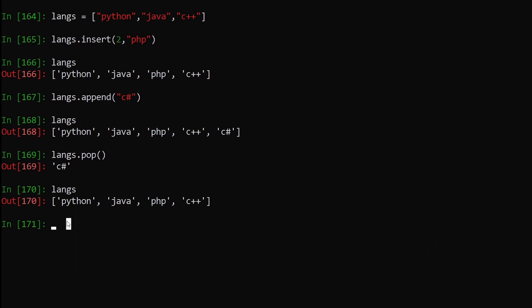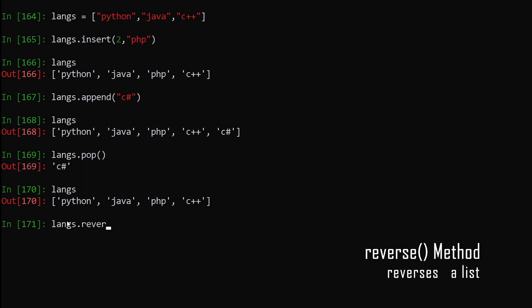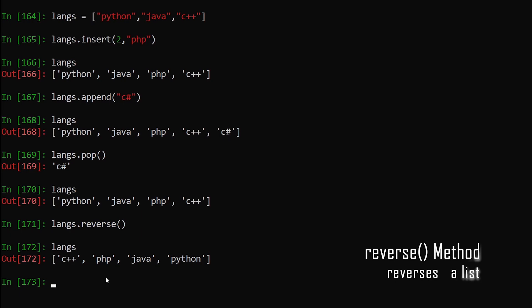Next, if we want to reverse our list, there's a method called reverse. We say lengths.reverse(), hit enter, and print out the list. You can see we have reversed the order of our list. This is how easily we can reverse lists in Python.